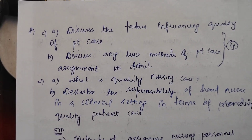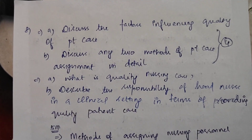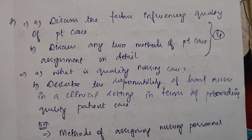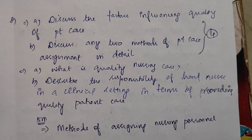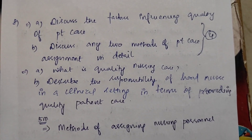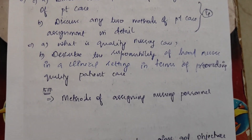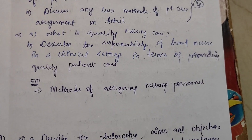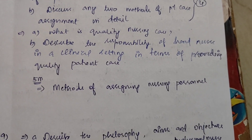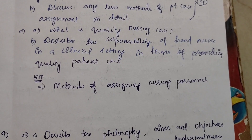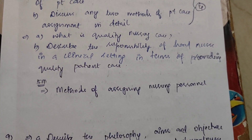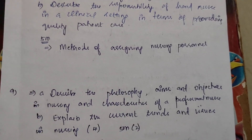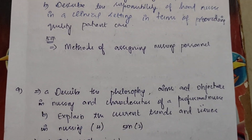Next, discuss the factors influencing quality of patient care. Explain any two methods of patient care assignment in detail — overall this appears four times. Next, what is quality nursing care? Describe the responsibility of a head nurse in a clinical setting in terms of providing quality patient care. For 5 marks, find methods of assigning nursing personal care.